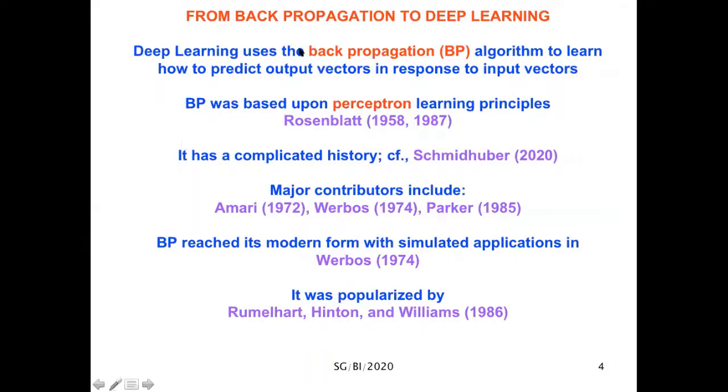Deep learning uses the backpropagation algorithm to predict output vectors in response to input vectors. Backpropagation was based upon perceptron learning principles that Frank Rosenblatt started introducing in the 1950s. Its main contributors include Shinichi Amari, Paul Werbos, and David Parker. Backpropagation reached its modern form with simulated applications in Paul Werbos' 1974 article and was popularized by Rumelhart, Hinton, and Williams 12 years later.